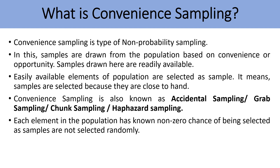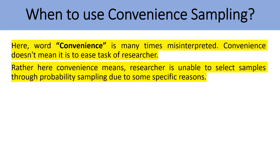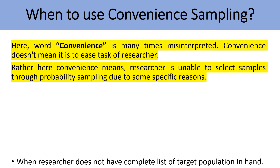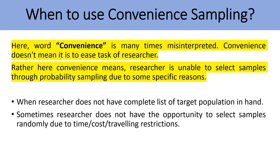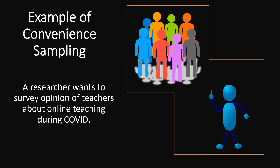Each element in the population has a known non-zero chance of being selected, but samples are not selected randomly. The next important thing to discuss is when to use convenience sampling. The word convenience is many times misinterpreted — it does not mean it is to ease the task of the researcher. Rather, convenience here means the researcher is unable to select samples through probability sampling due to specific reasons, such as not having a complete list of the target population, or not having the opportunity to select samples randomly due to time, cost, or traveling restrictions.